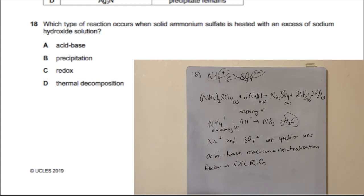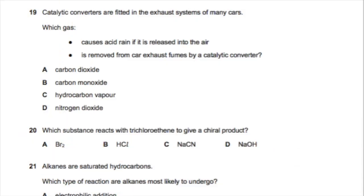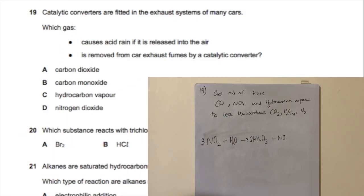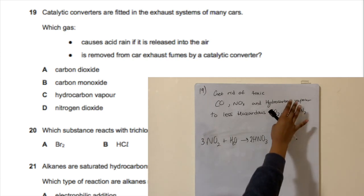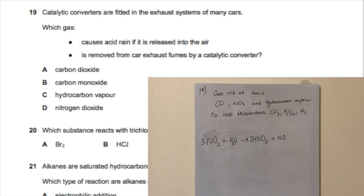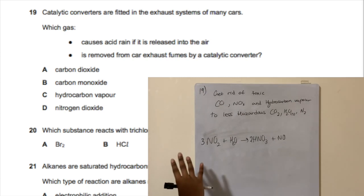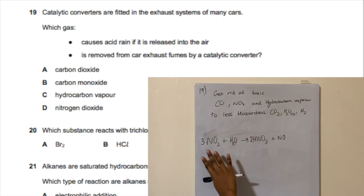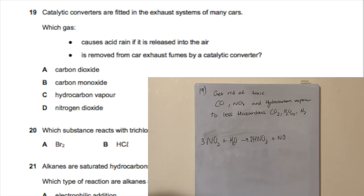For question 19, catalytic converters remove toxic gases — carbon monoxide, nitrogen oxides, and hydrocarbon vapors — by converting them to less hazardous substances like CO₂, water vapor, and nitrogen. The substance causing acid rain that's removed is nitrogen dioxide, which reacts with water in rain to form nitric acid. The answer is D.